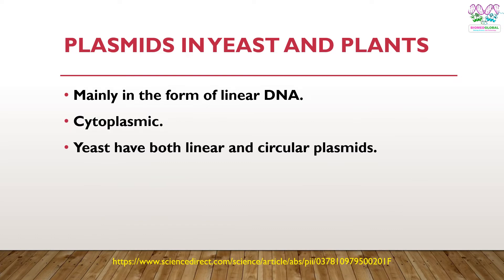So far we have been talking about plasmids as extra-chromosomal segments of DNA which are circular in nature. But plasmids can also be linear, and linear plasmids are found in eukaryotic cells. As you know, eukaryotic cells have a nucleus. So the plasmid will be a cytoplasmic one unless it is an integrating plasmid that can go into the nucleus and integrate into the genomic DNA.